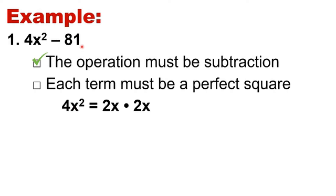How about 81 — is 81 a perfect square? Yes. So 81 is from 9 times 9. It means that we satisfy the second requirement.